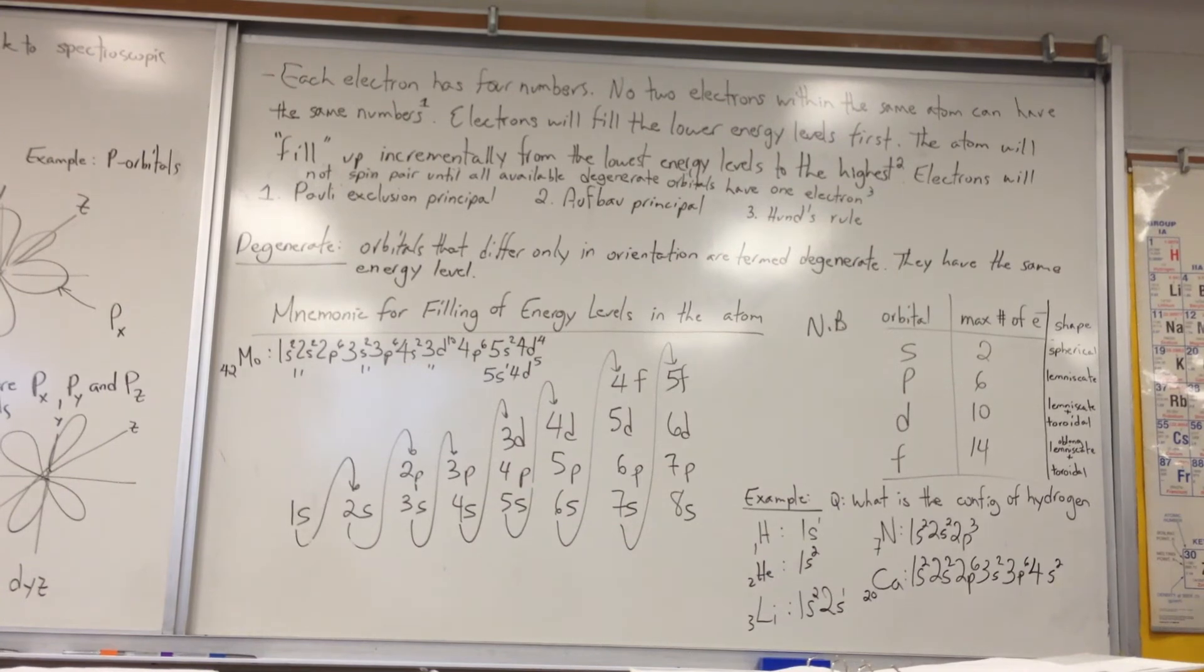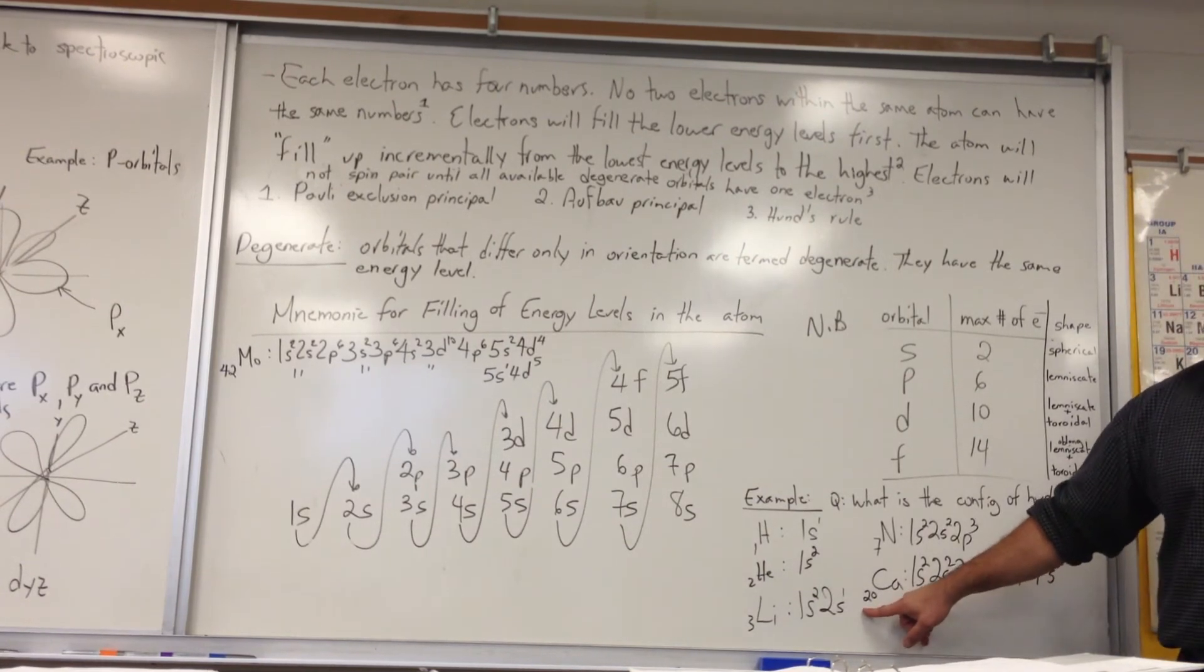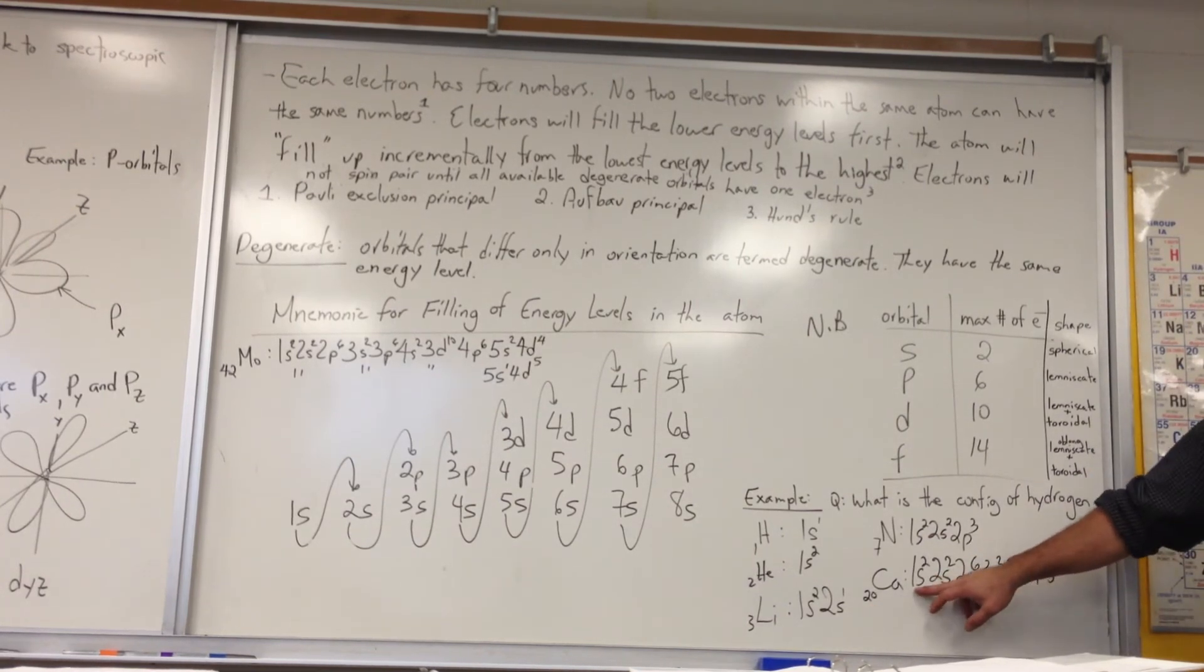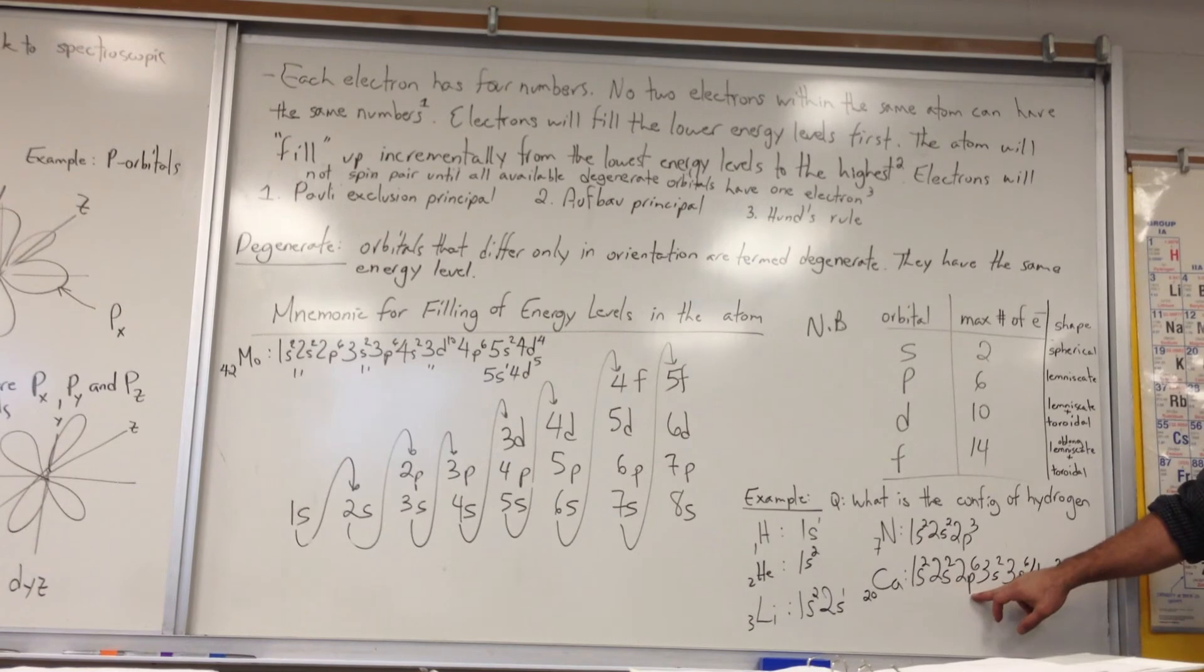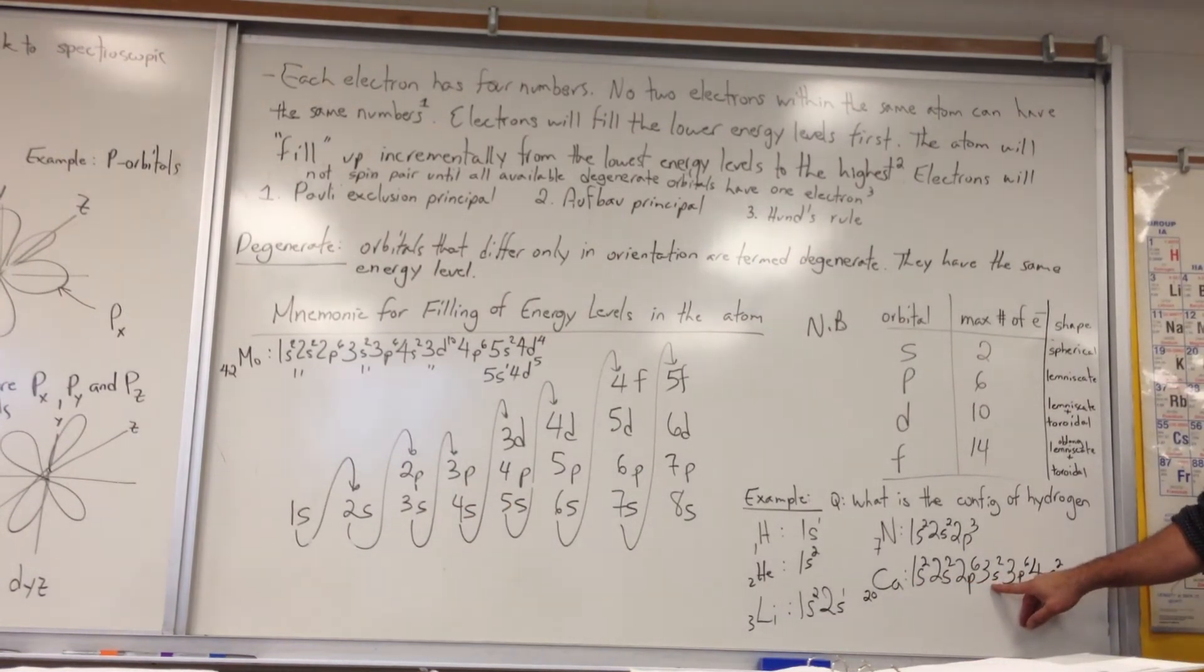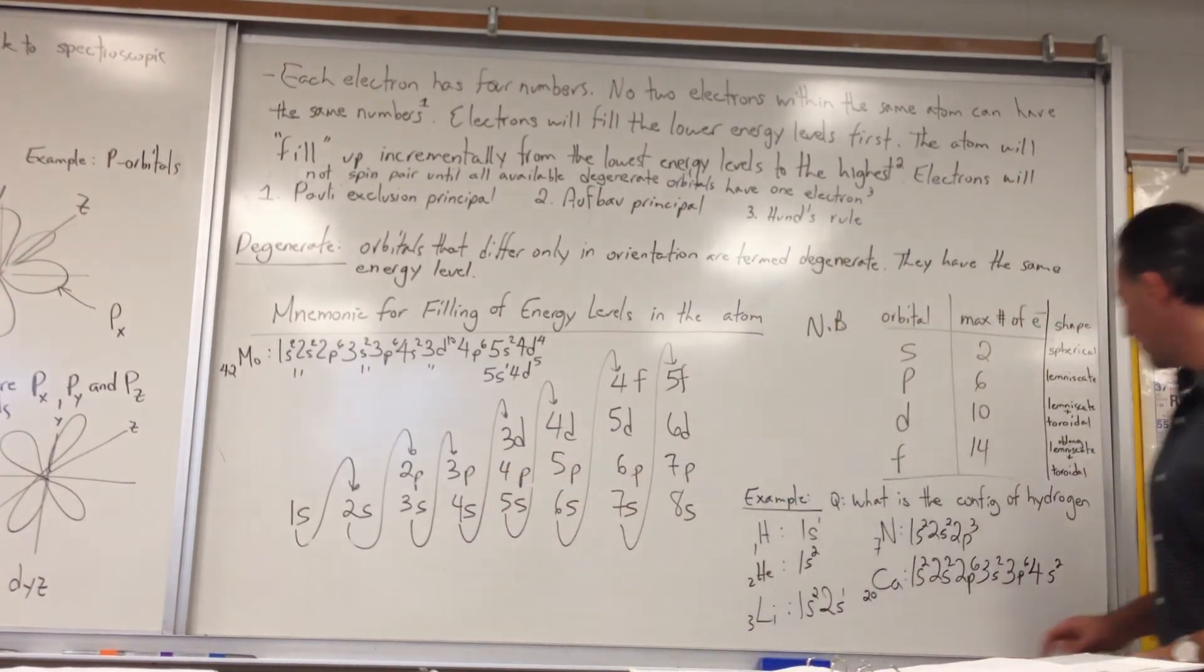Now let's look at a bigger atom, like calcium. Calcium has 20 protons, and the neutral calcium atom will also have 20 electrons. Let's follow the pattern, 1S2, 2S2, 2P6. Next thing will be 3S, so that 3S2 is filled. Then if we go to 3P6, that's also going to be filled.